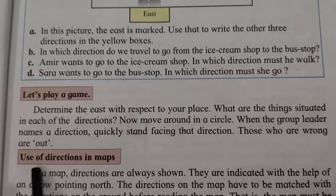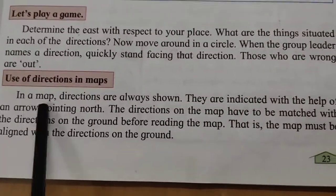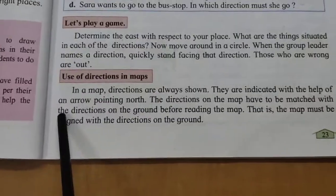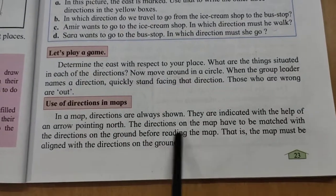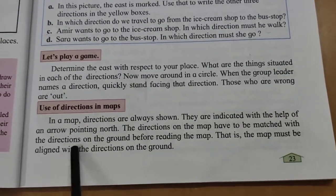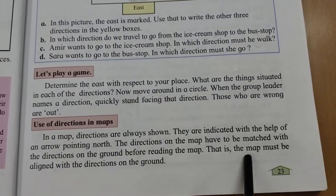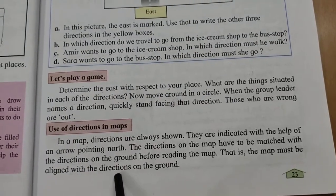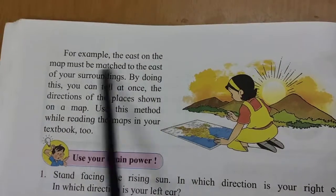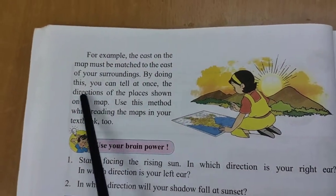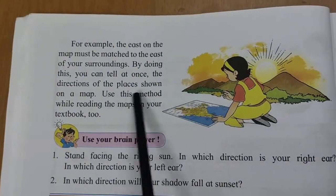Now, use of directions in maps. In a map, directions are always shown — they are indicated with the help of an arrow pointing North. The directions on the map have to be matched with the directions on the ground before reading the map; that is, the map must be aligned with the directions on the ground.